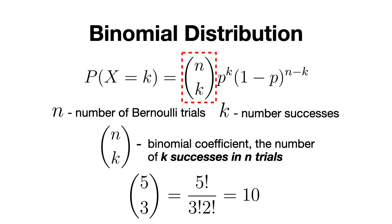For example, if we are looking at 3 successes out of 5 trials, the binomial coefficient will be equal to 10, which is equal to the number of ways we can choose 3 trials out of 5 to be successful.